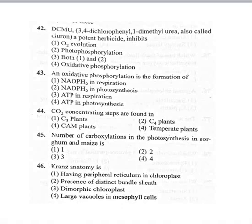Coming to the 44th question: carbon dioxide concentrating steps are found in option 1 C3 plants, option 2 C4 plants, option 3 CAM plants, option 4 temperate plants. Carbon dioxide concentrating steps are found in C4 plants, because in C4 plants carbon dioxide is fixed in both mesophyll cells and bundle-sheath cells. So carbon dioxide is concentrated in both cell types, and the correct option is C4 plants.